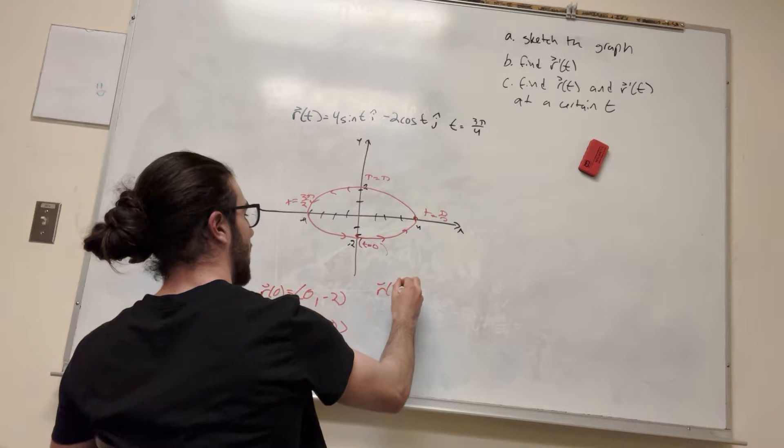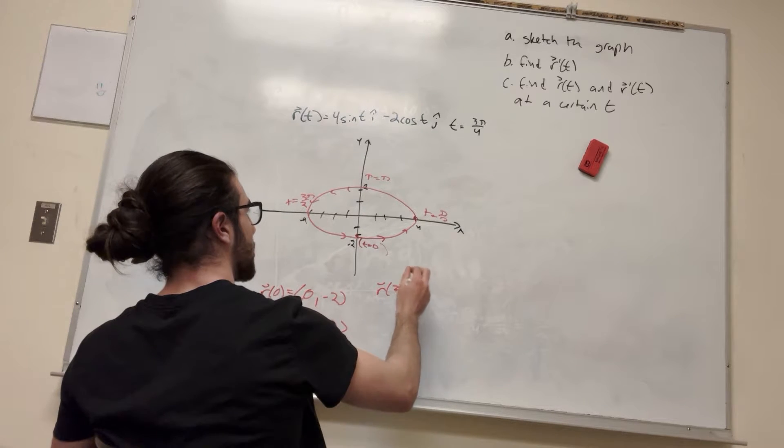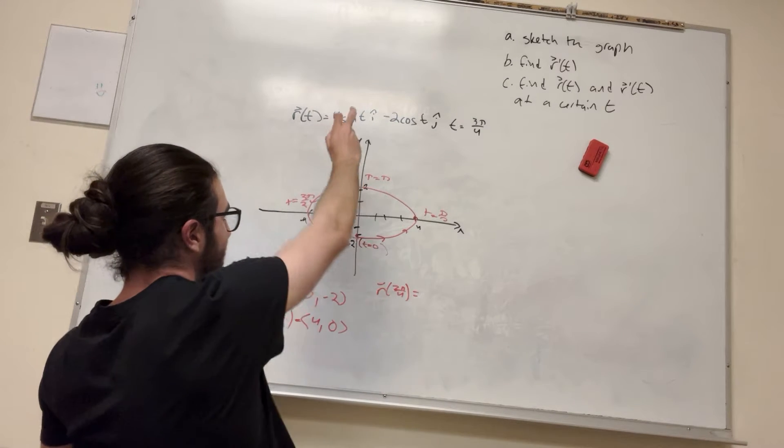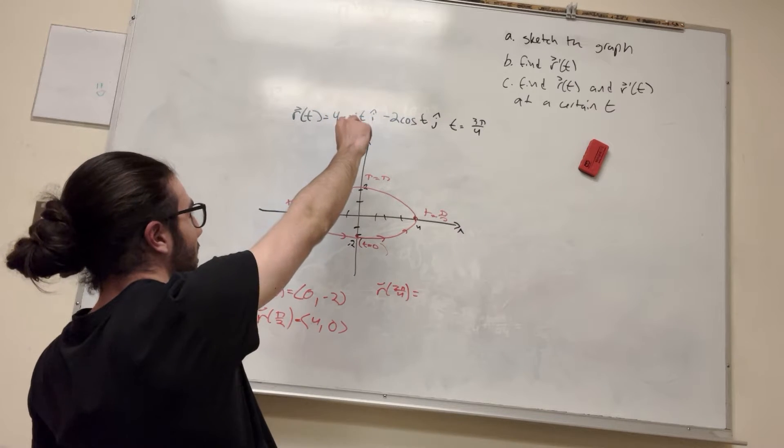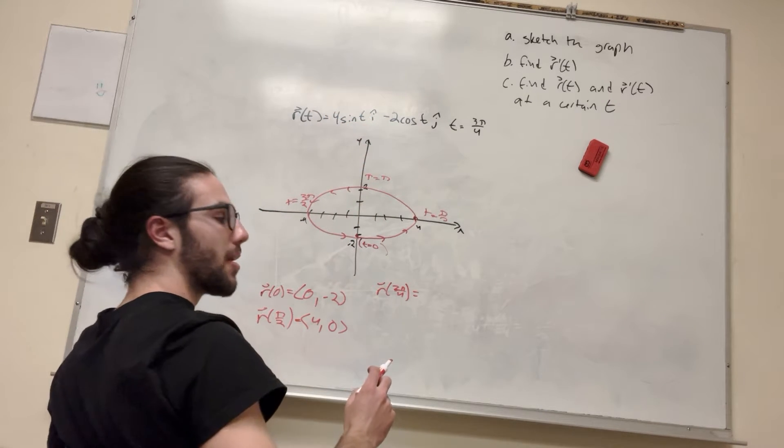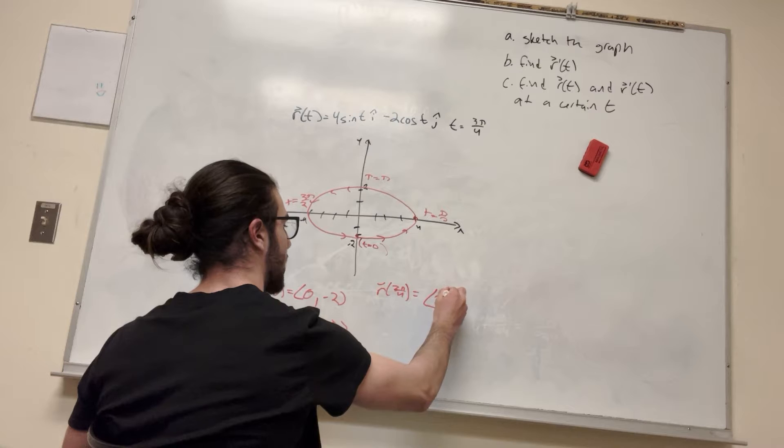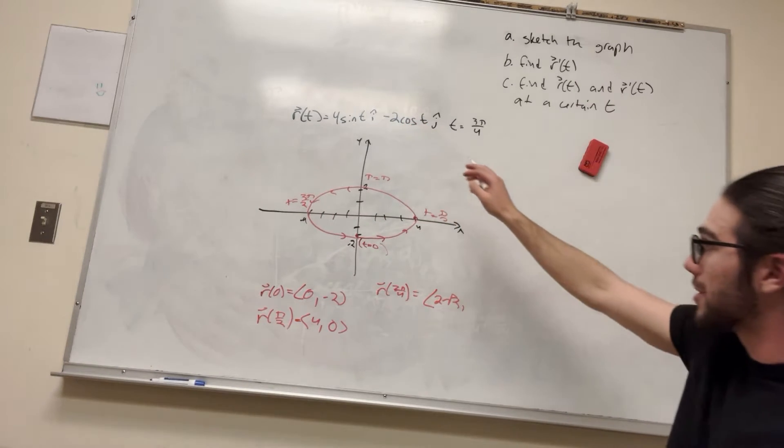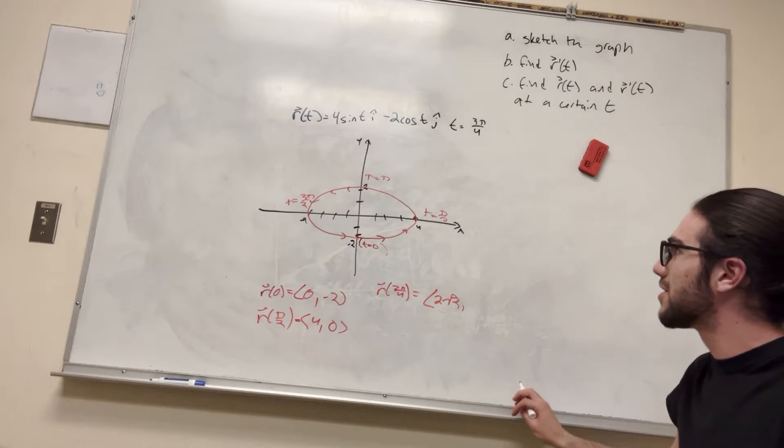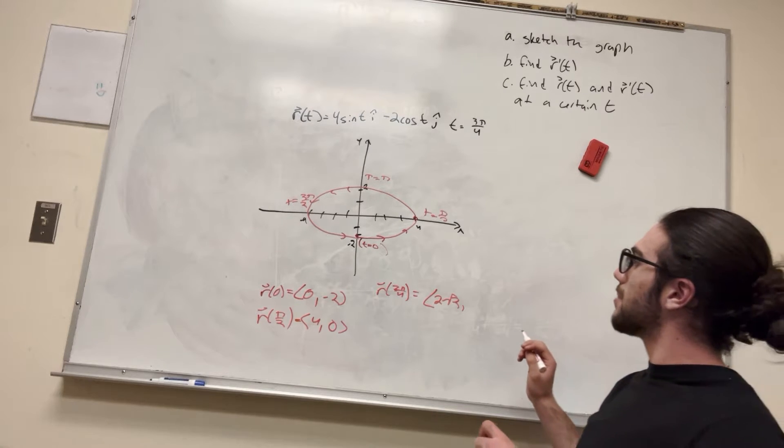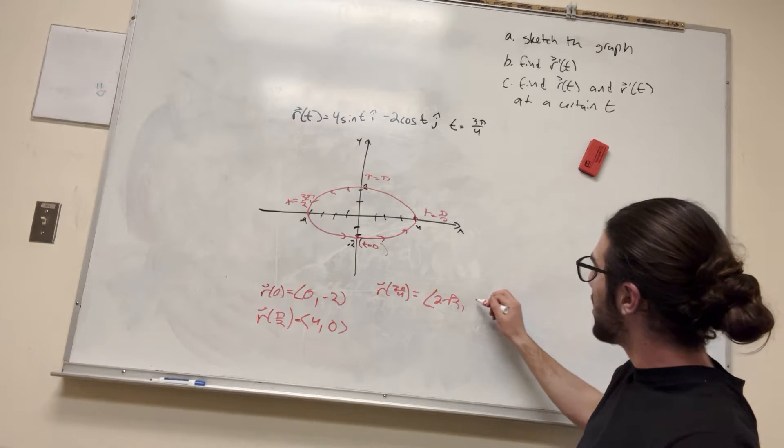So r of 3π over 4 is equal to 2. How about that? Alright, so sine of 3π over 4 is going to be radical 2 over 2, times 4, so it's going to be 2 radical 2. And then, for here, it's also going to be 2 radical 2 by negative 2 radical 2. Never mind, it's going to be positive. Alright, so it's going to be radical 2.